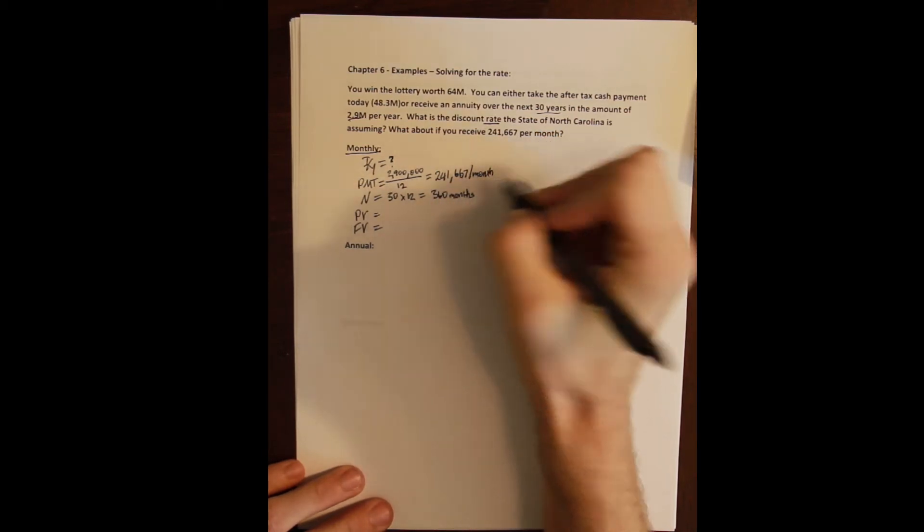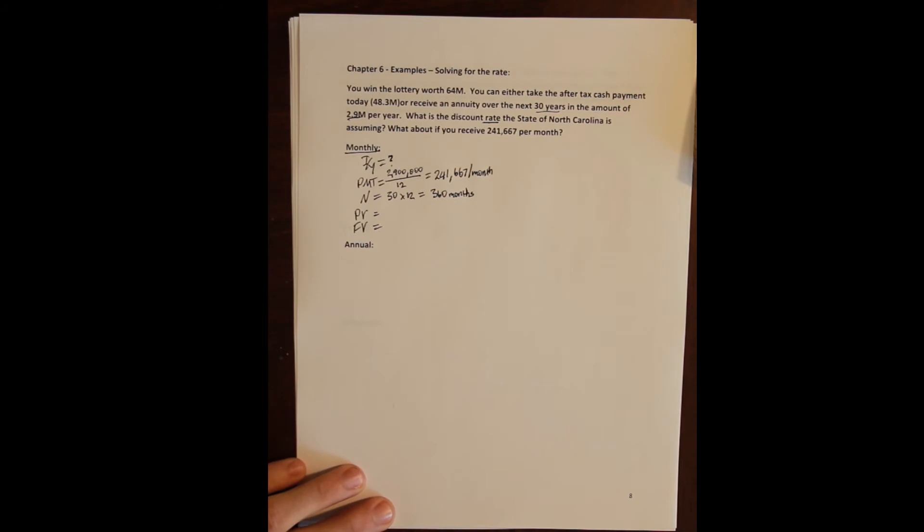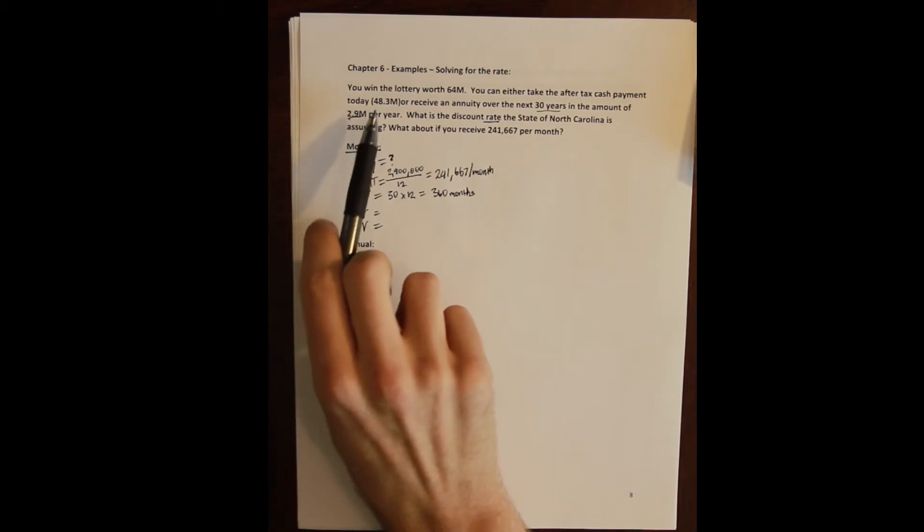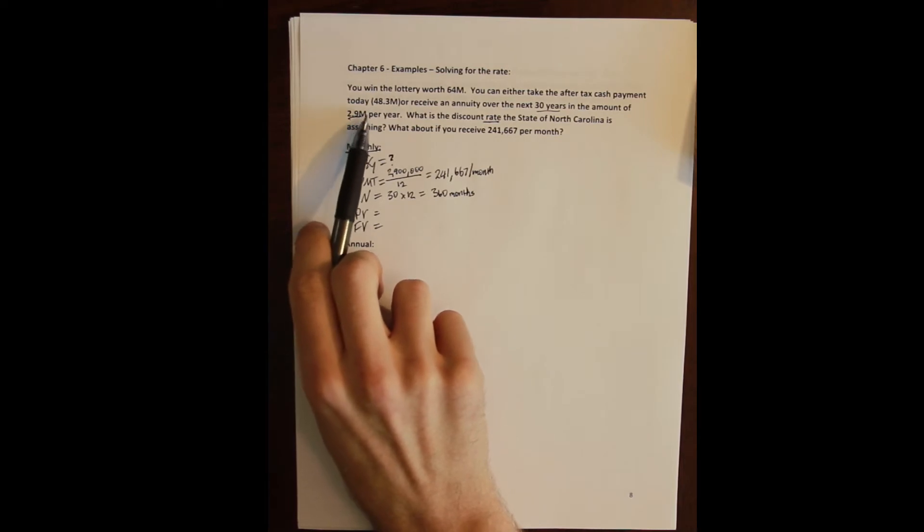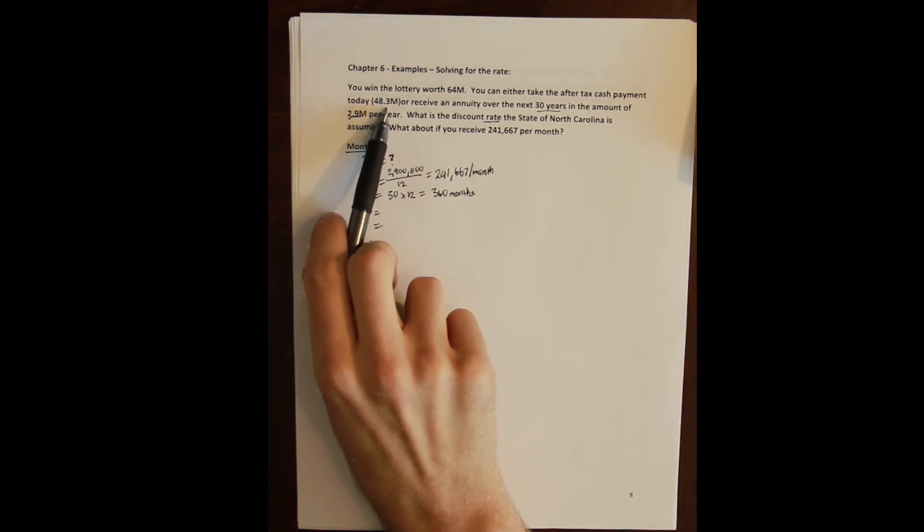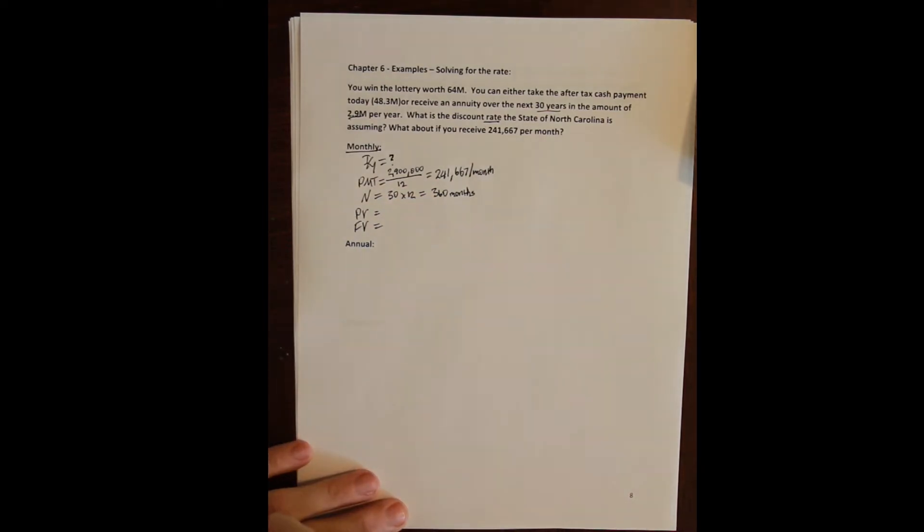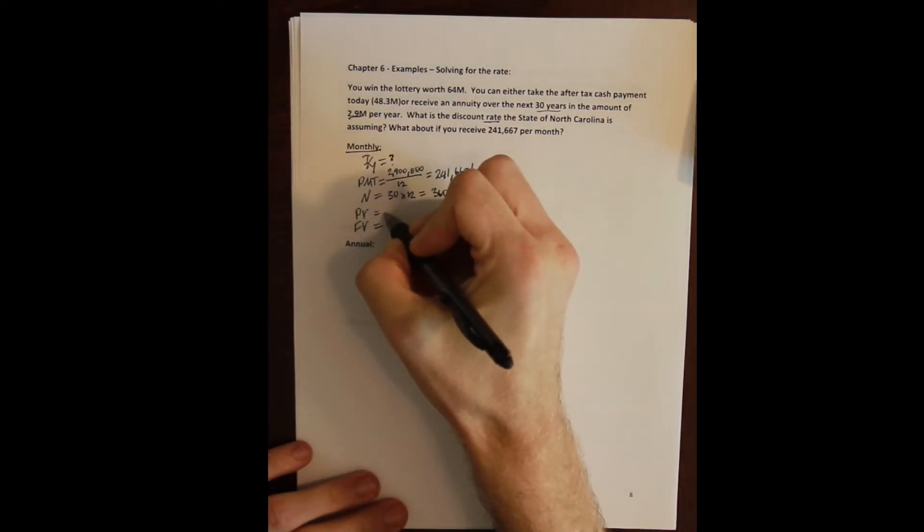Our present value here is the amount that we would have to give up in order to get the annuity, right? So it's a little bit tricky of an idea, but essentially the present value in a problem like this is that I could either choose to take the lump sum or the annuity, but if I take the annuity then I am effectively paying the lump sum because I'm not taking that. So I'm saying I would be willing to trade you $48 million now for the right to get $241,000 a month for the next 360 months.